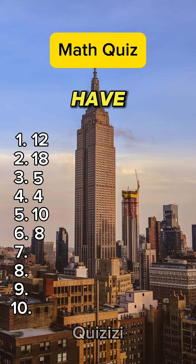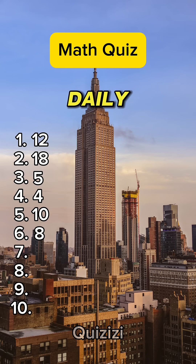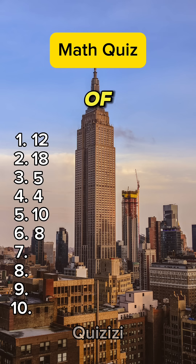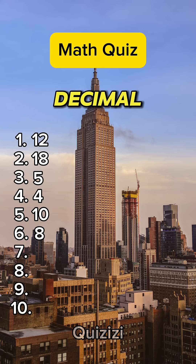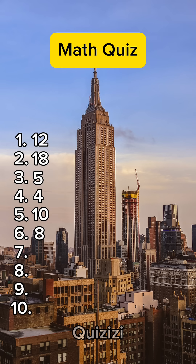If you have not already, hit the follow button for daily quizzes. What is the value of Pi rounded to 2 decimal places? 3.14.